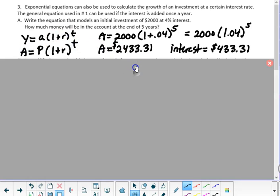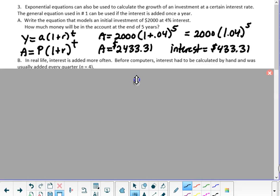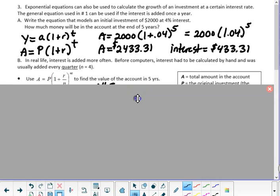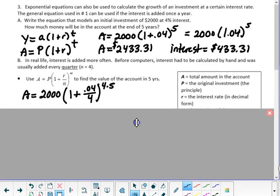But another bank says, hey, I've got a better deal for you. Let's add the interest every quarter, every 3 months. Same interest rate, but we're going to add it every 3 months instead of once a year. So what would the equation look like?